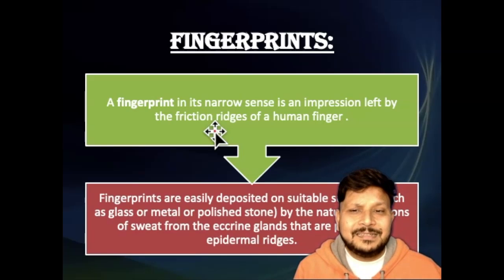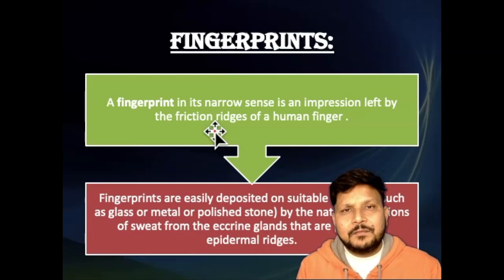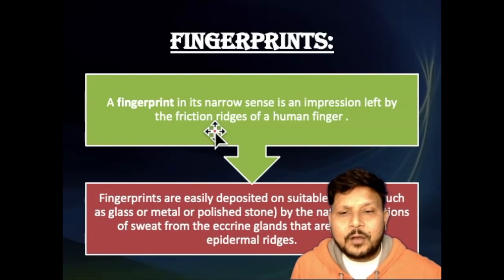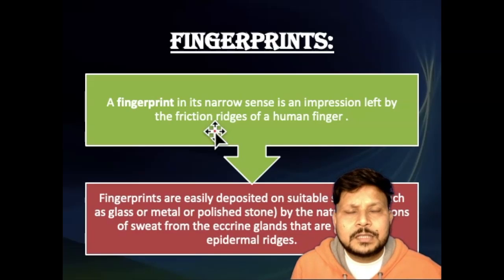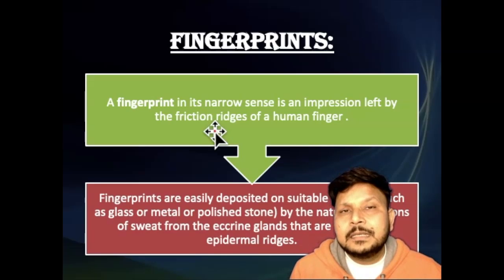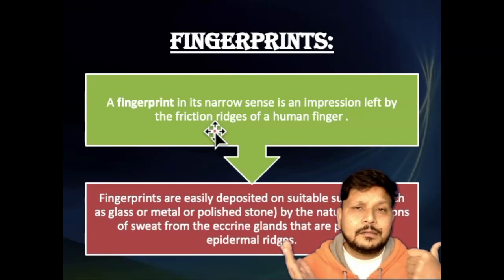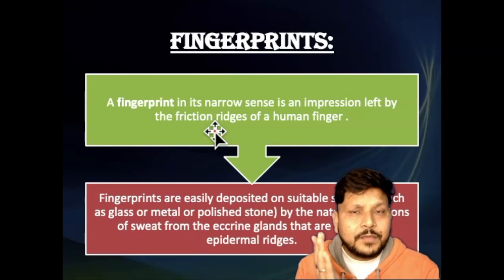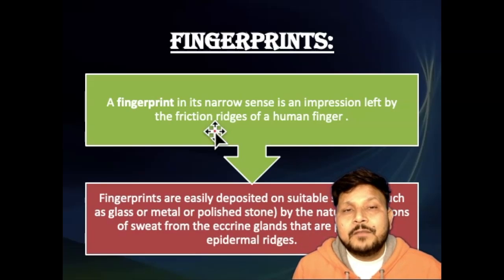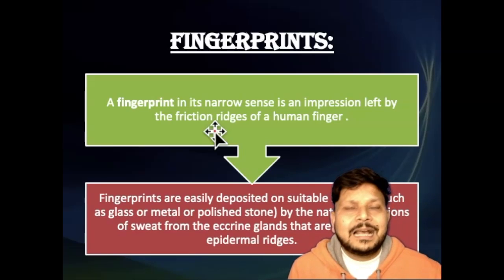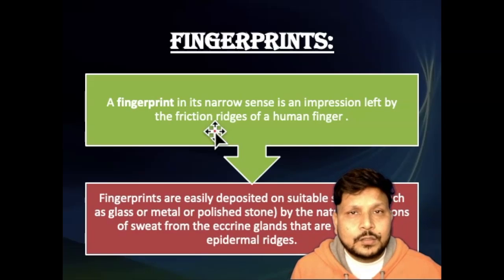A fingerprint is nothing but an impression left by the friction ridges. When we hold or touch something, we leave our friction ridge impression there — that's what we call fingerprints. They are easily deposited on any type of surface. Sometimes you can see them, like an inked impression on paper, but when touching a glass surface or a desk, you can't see them — those are known as invisible or latent prints.